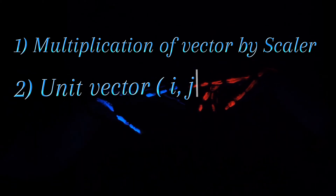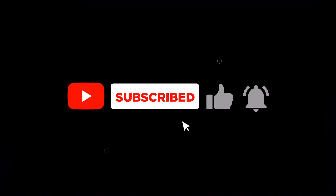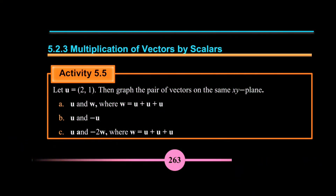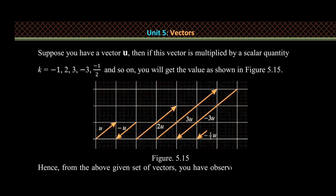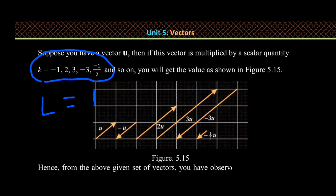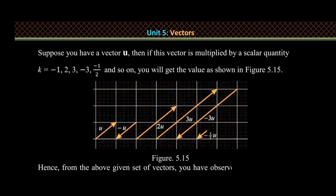This is the unit vectors section. Multiplication of Vectors by Scalar. First, consider the color of the vectors. The unit vectors — take a look at the number of vectors.